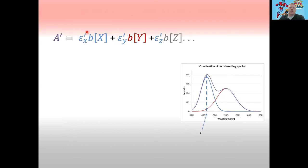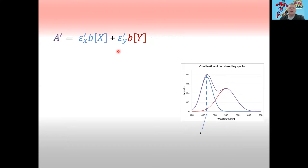You're also going to have different molar absorptivities for each species at each wavelength. For species one, we have this spectrum; for species two, we have this absorption spectrum. At one wavelength species one has a much higher absorbance than species two, but at a different wavelength species two has a much higher absorbance. So in this equation, all we're doing is adding up Beer's Law for all species present at wavelength prime. Since we only have two species in our experiment, we eliminate the Z term and just have species X and species Y.